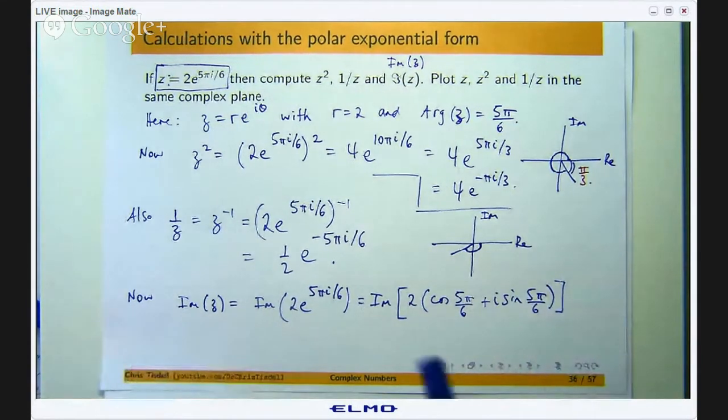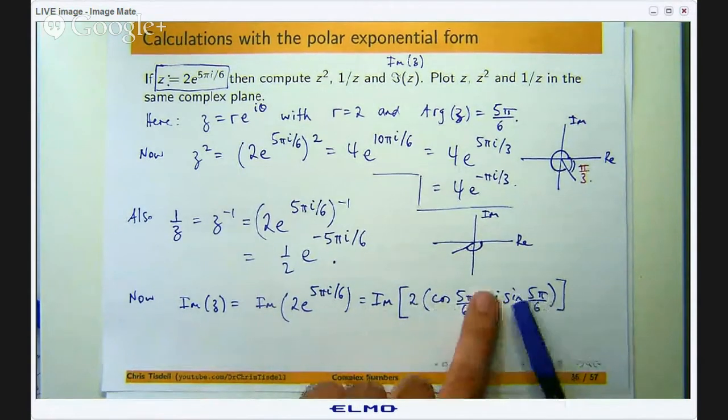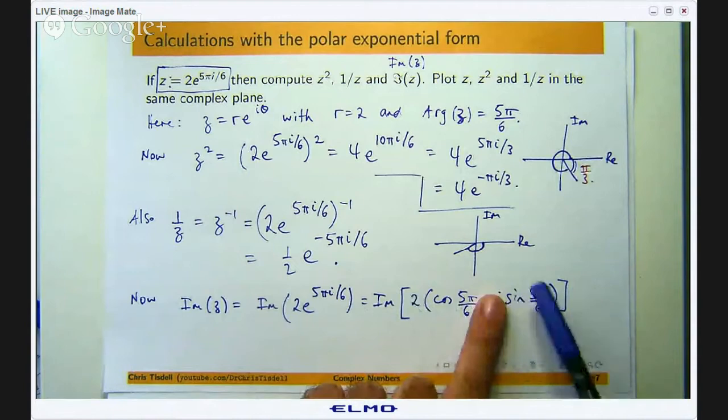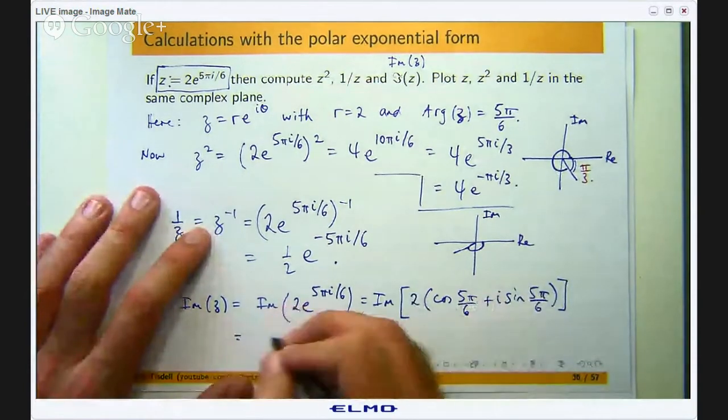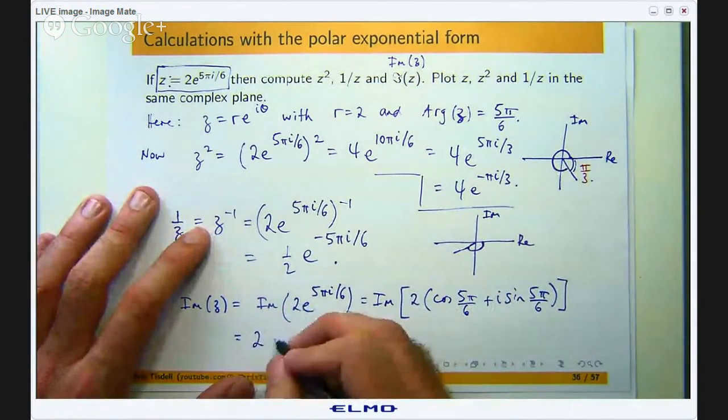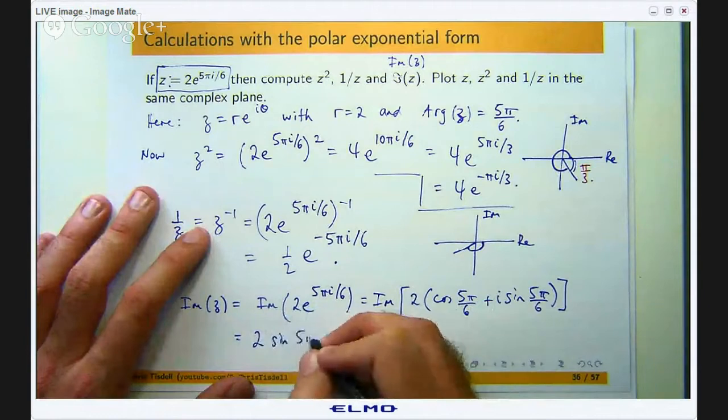Okay now we only want the imaginary part so this will disappear and we would want to choose the coefficient of i basically with this 2. So it is just 2 sin(5π/6).